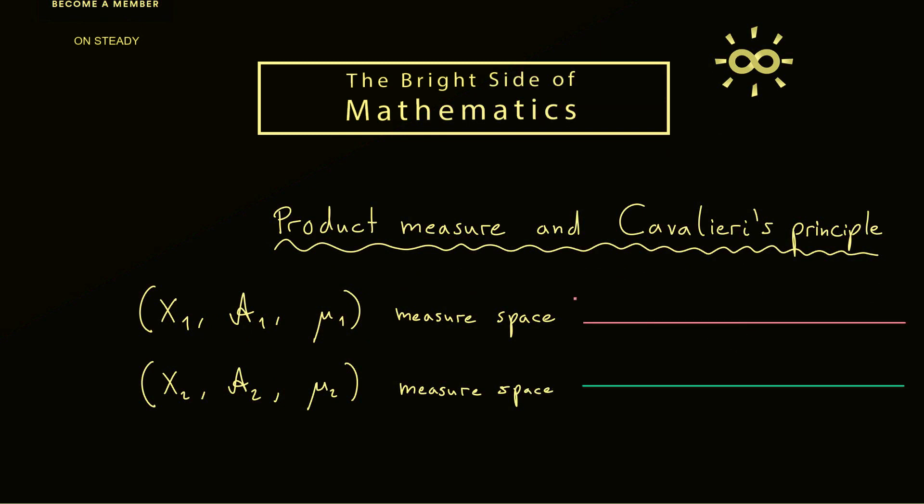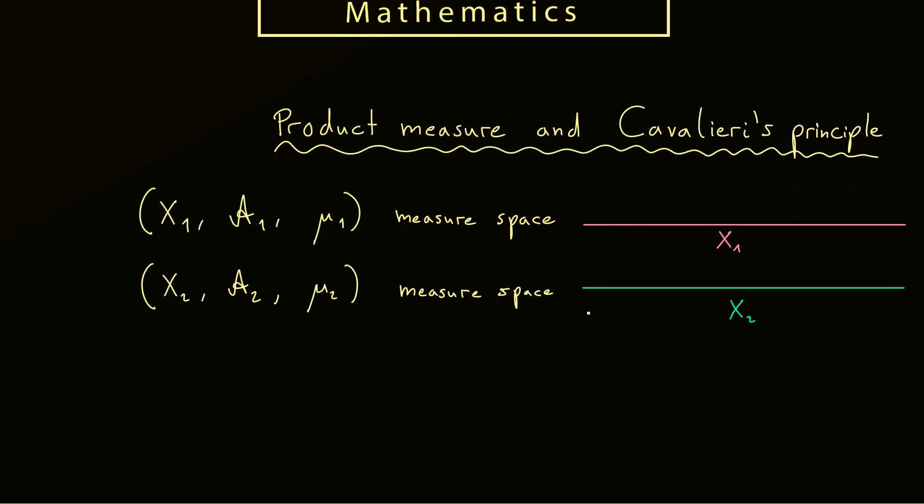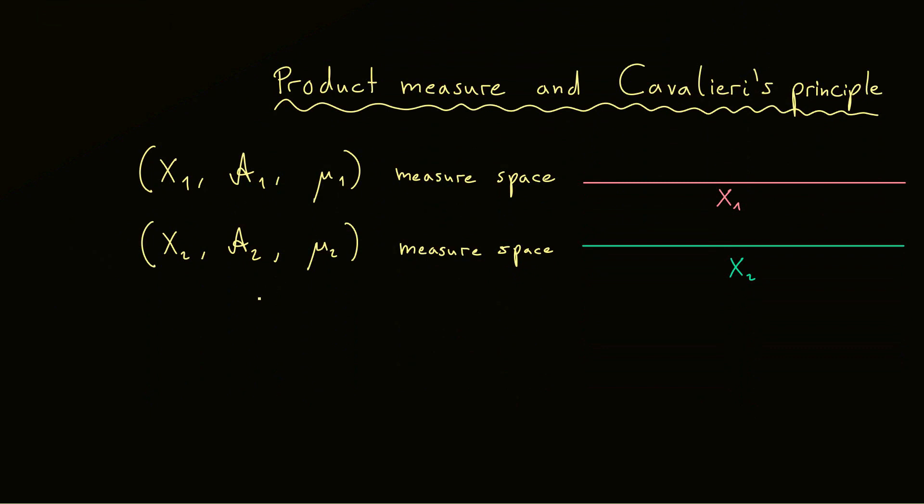Now what we can do is to visualize the set X1 as a green line and the set X2 as this red line. And now in order to define the product measure we need to create a new measure space that lives on the Cartesian product of X1 with X2. Therefore we need a new sigma algebra which we can just now call A and a measure which we can also just call mu. And this mu is then our so-called product measure.